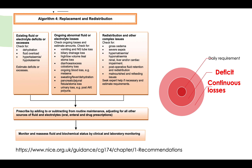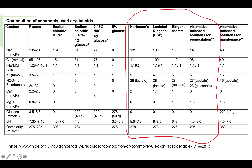Most of these fluid losses are isotonic — they look like plasma — and that's why the balanced solutions are designed to resemble plasma. You can see the normal plasma electrolyte levels here for reference. Hartmann's, lactated Ringer's, Ringer's acetate, plasma-lyte, or any balanced electrolyte solution available in your hospital can be used as replacement for gastrointestinal losses. We do not normally replace GI losses with normal saline.